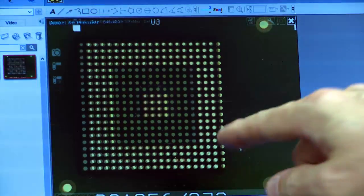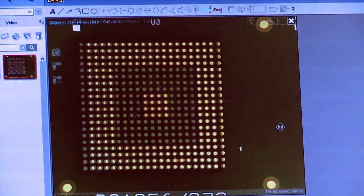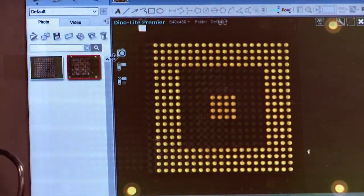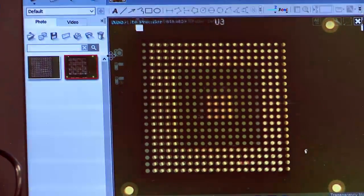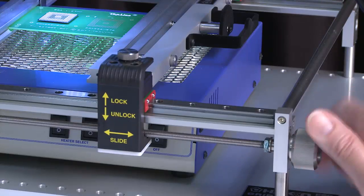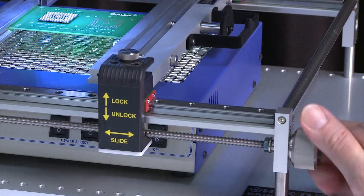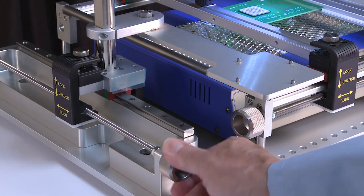Contrast and intensity can be adjusted as needed as well as the superimposed view of the component balls and grid array. Use the fine X and Y adjustment knobs to align the component balls to the grid array on the board.